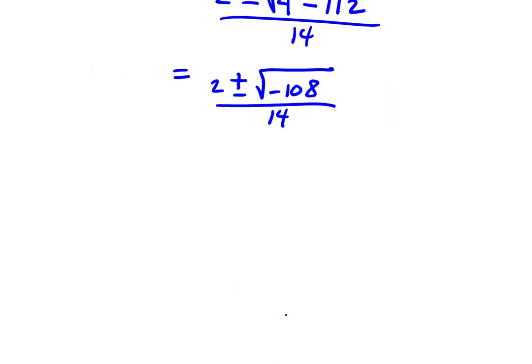Now we'll want to reduce further. We'll keep this 2 out front. But then notice and recall, when you have a negative sign inside a square root, that becomes an imaginary term. And so this becomes i√108, and that's all over 14.